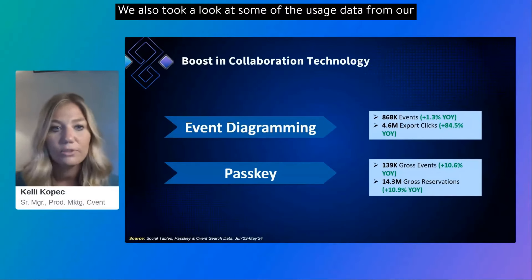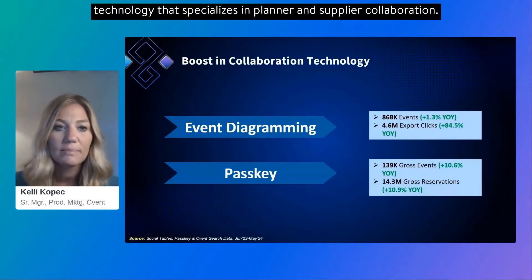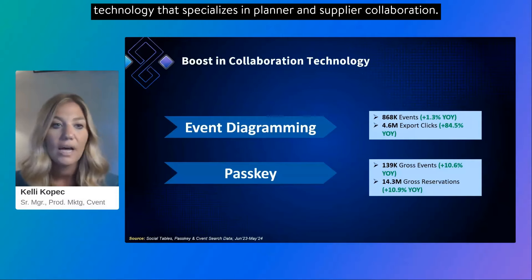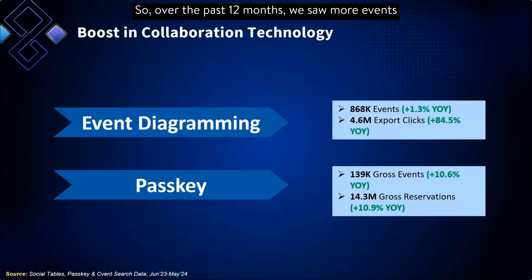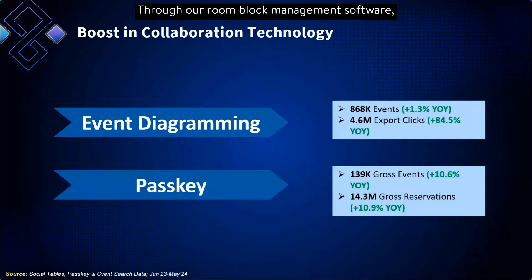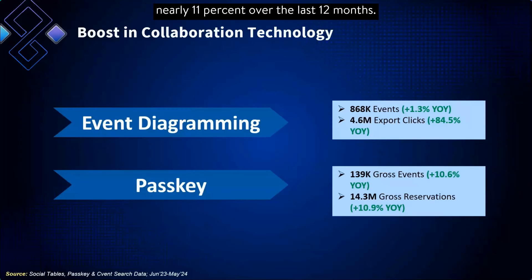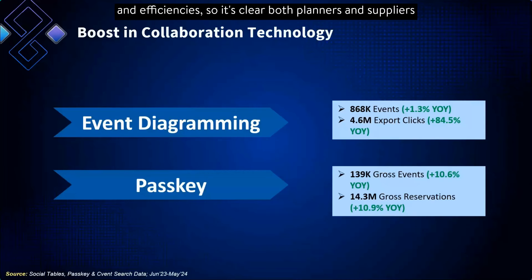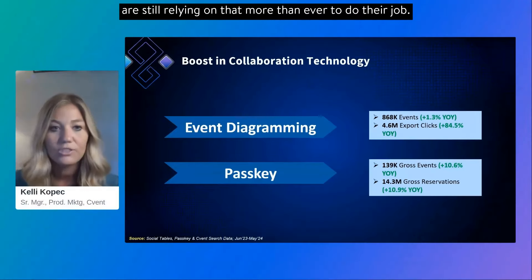This was significant across several industries. We also looked at usage data from our technology that specializes in planner and supplier collaboration. Over the past 12 months, we saw more events being managed between planners and suppliers, more diagram exports facilitating collaboration in our event diagramming tool, and through our room block management software, past key events and reservations are up nearly 11% over the last 12 months. With collaboration through tech comes time savings and efficiencies — it's clear both planners and suppliers are still relying on that more than ever.